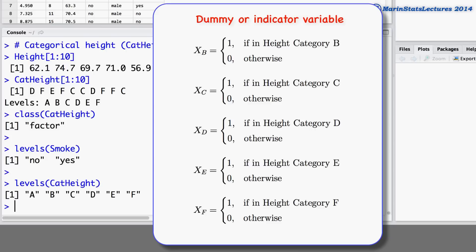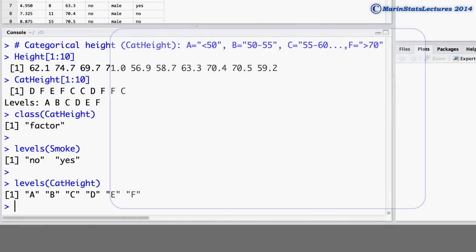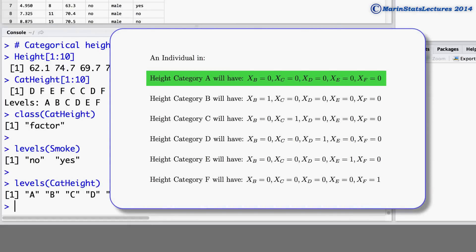You can notice that height category A is serving as our reference or baseline group. An individual in height category A will have xB equal to 0, xC equal to 0, xD, xE, and xF all equal to 0.